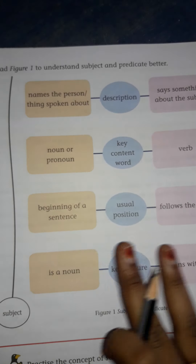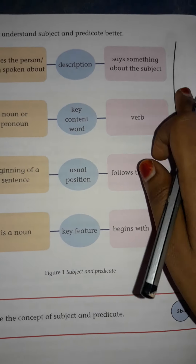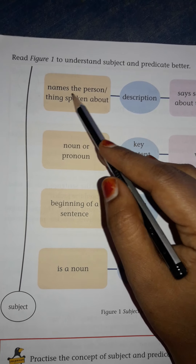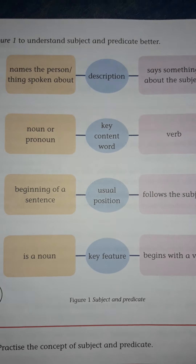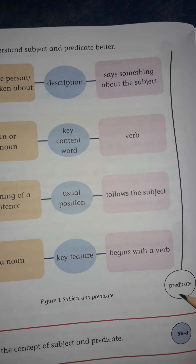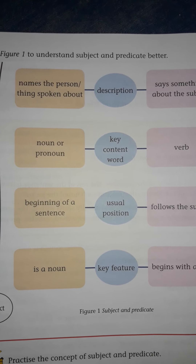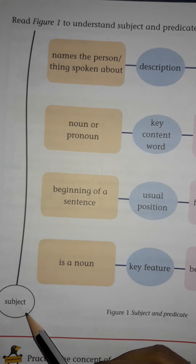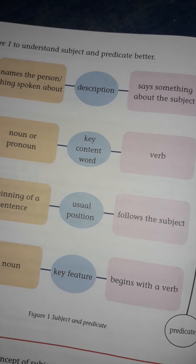Now here is an explanation comparing subject and predicate. The subject names the person or thing spoken about, and the predicate says something about the subject. The subject is a noun or pronoun and comes at the beginning of the sentence. The predicate follows the subject and begins with a verb.